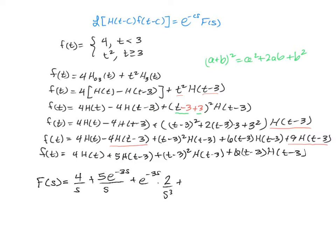And then back here, finally, we're going to have our coefficient 6, and then we're going to have our e to the negative 3s from the Heaviside, and then the Laplace transform of t is 1 over s squared. And then those terms there make up the Laplace transform of that function f.